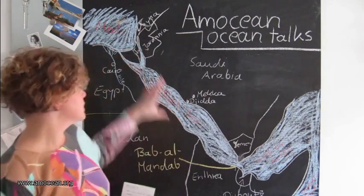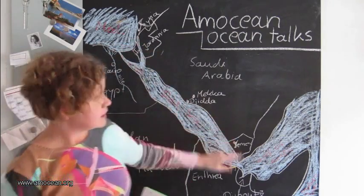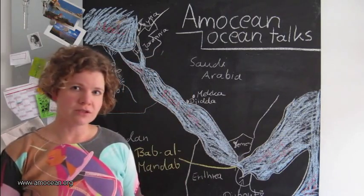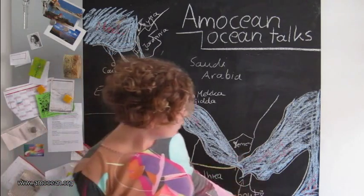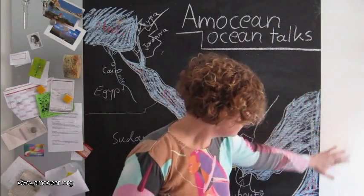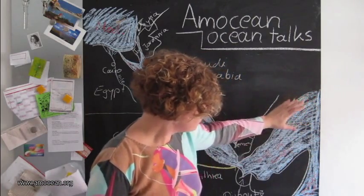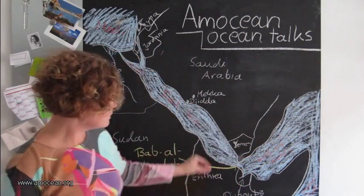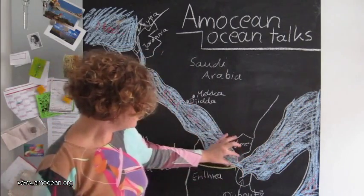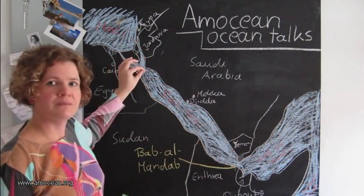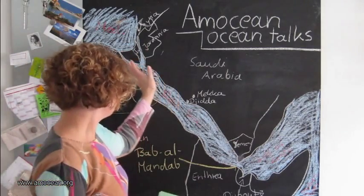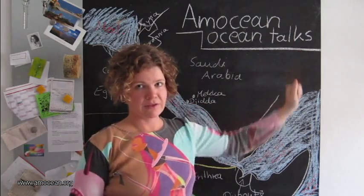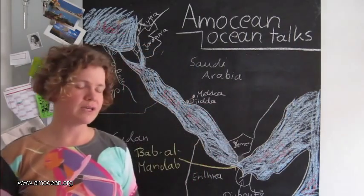The Red Sea is a seawater inlet of the Indian Ocean. The Indian Ocean forms the Arabian Gulf, of which the Gulf of Aden is a part. And the Gulf of Aden opens into the Red Sea, which then in turn separates Africa from Asia, the Arab Peninsula being part of Asia.